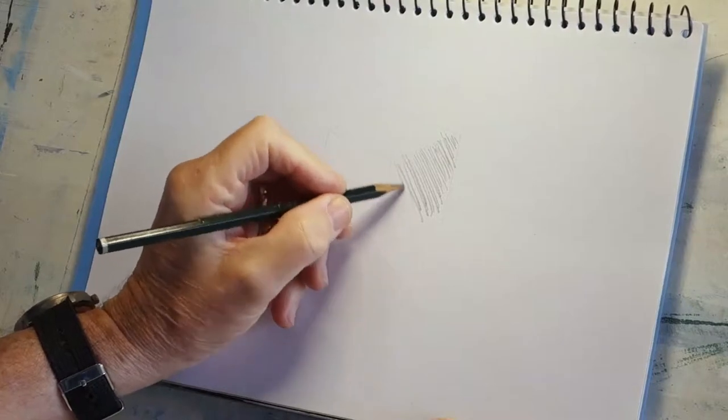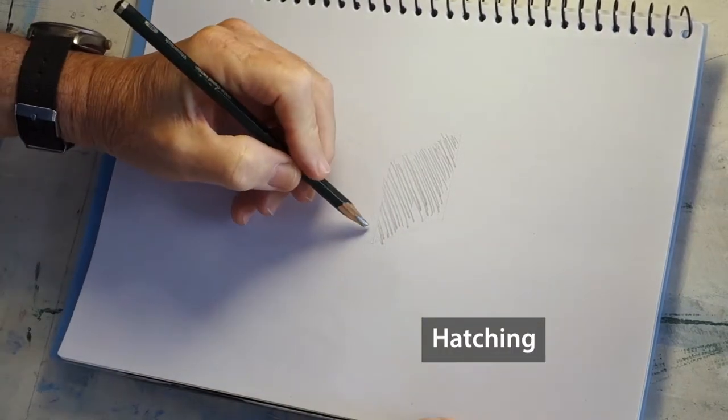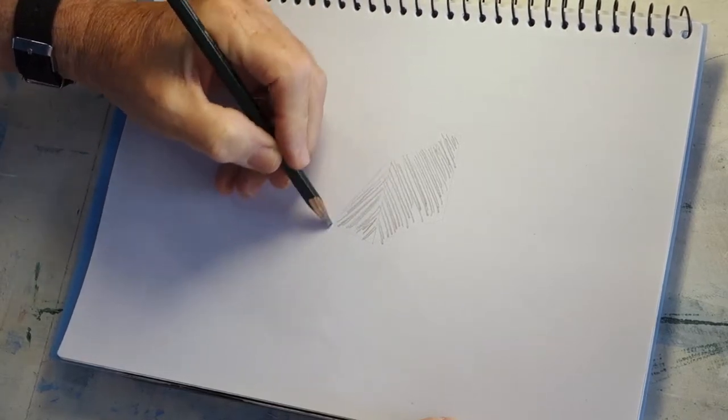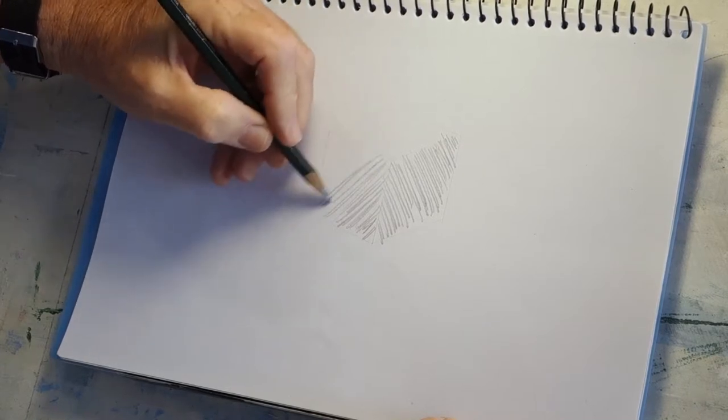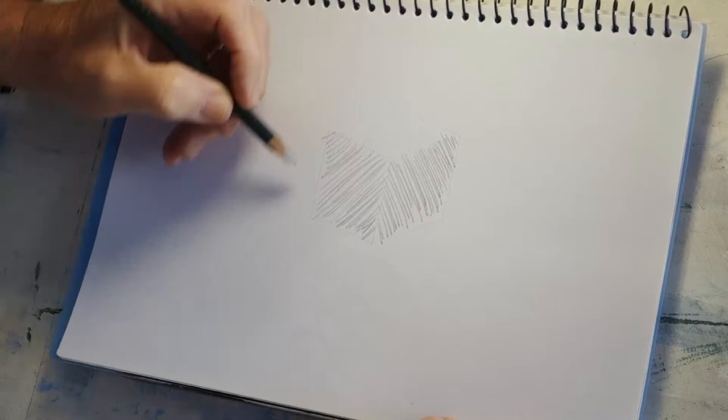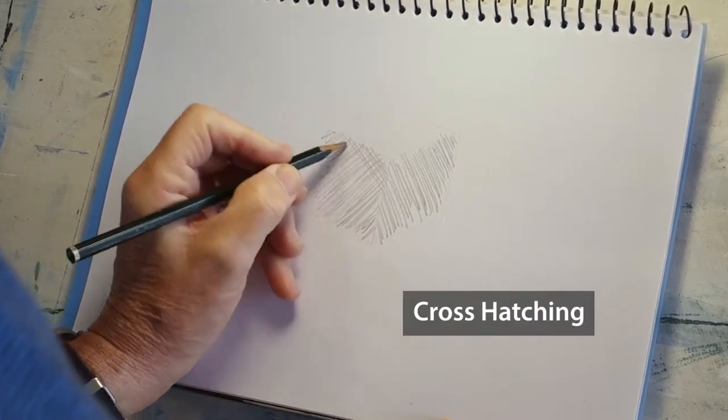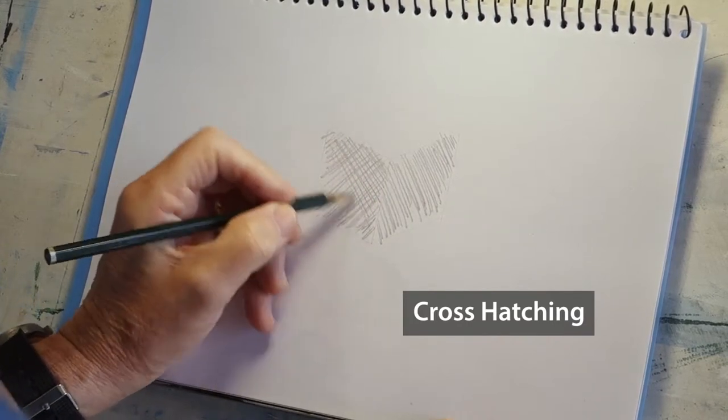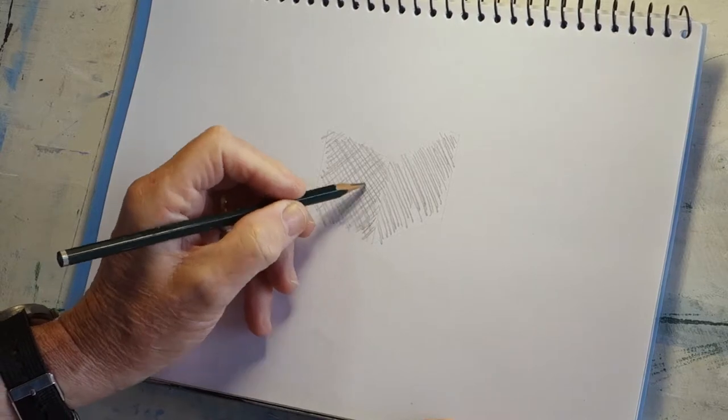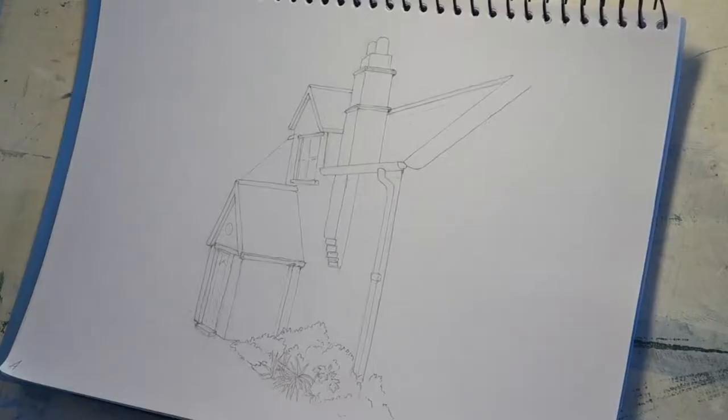Let's start with the basic technique hatching and cross hatching. Simple hatching like this can indicate the shadowed side of an item. By varying the pressure you use you can achieve a good graduation. You can intensify the darker shadows by cross hatching. Hatching is never going to produce photographic quality if that's what you're after. But cross hatching can give a nice artistic look.